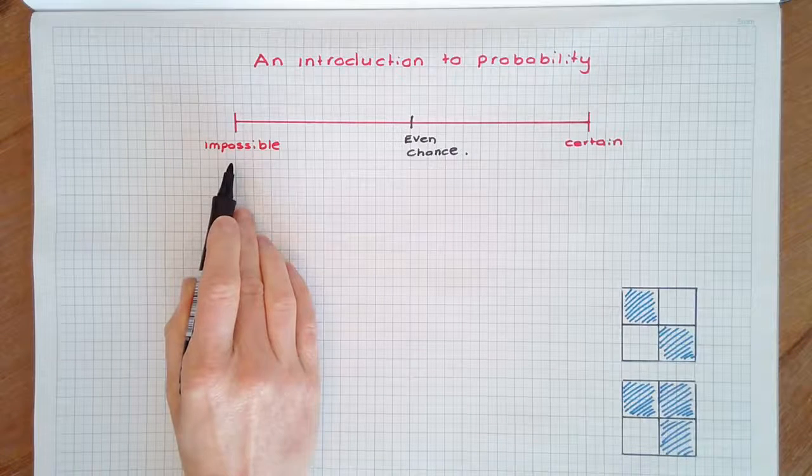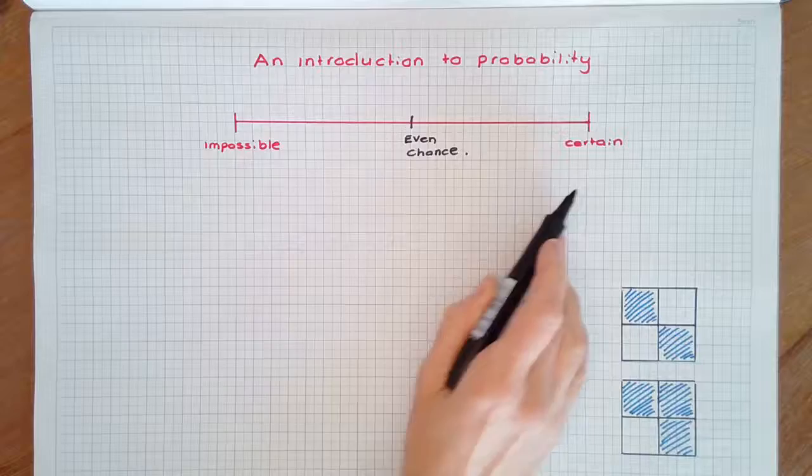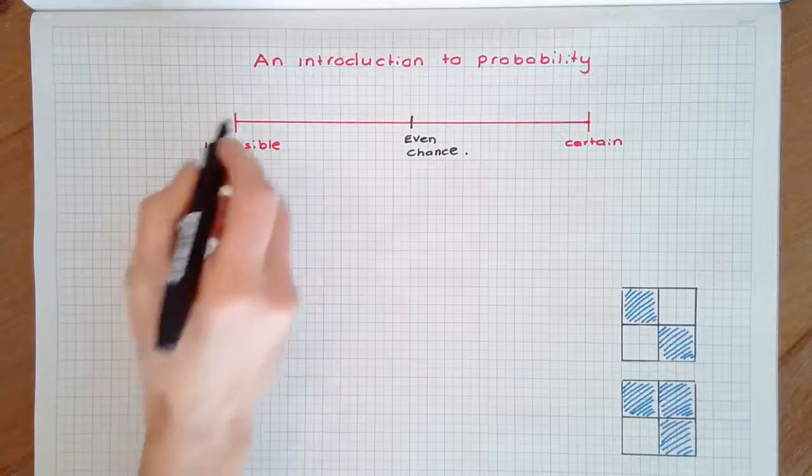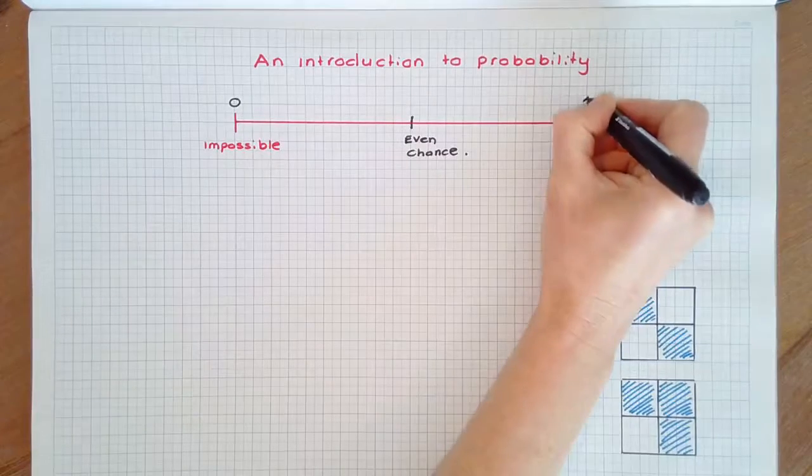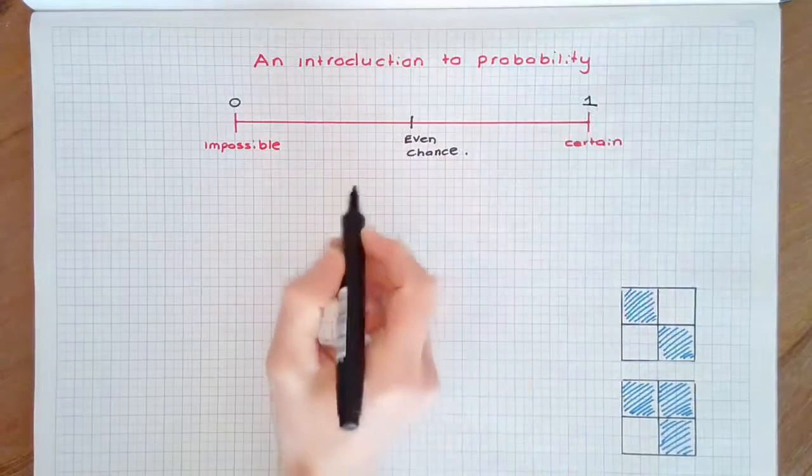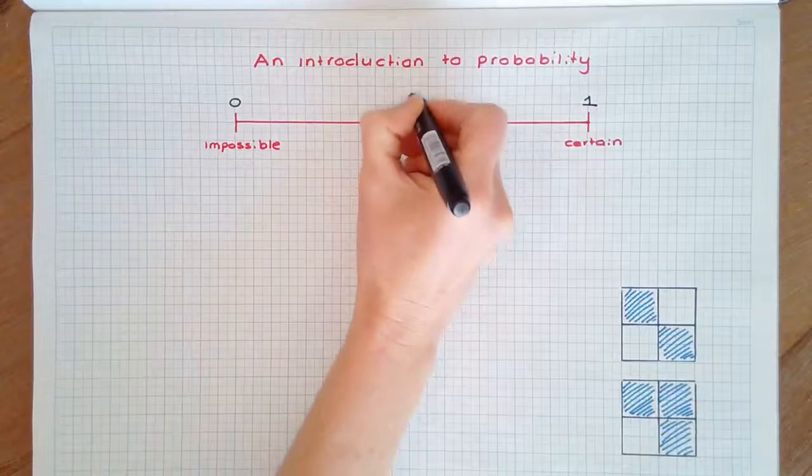We measure probability on a scale from 0 to 1. Impossible has a probability of 0, and certain has a probability of 1, with even chance having a probability of 1 half.